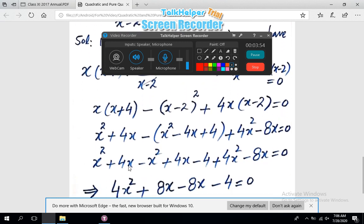Next step, we have opening the bracket x² + 4x minus, applying the formula (a - b)² = a² - 2ab + b², opening the bracket here we get 4x² - 8x = 0.